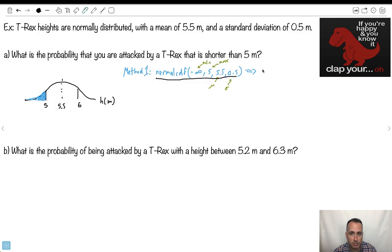Do you notice? Normalcdf, min, max, mean, standard deviation. It says it's 0.159, let's just say. So it's approximately 0.159. There we go. That was one method of doing this, and I'm done.